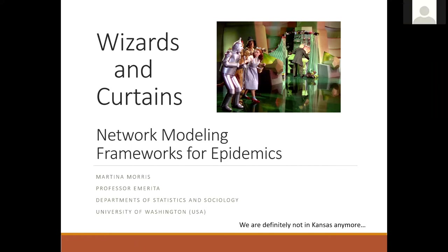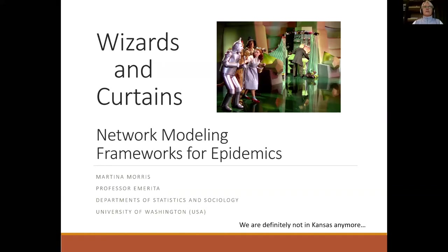This talk will be a very high-level overview of how network modeling, or the modeling of transmission networks, appears in the context of mathematical models for the spread of infectious disease. It's entitled 'Wizards and Curtains' because so much of this stuff tends to happen behind a curtain, and even if you are very well-versed in one particular form of mathematical modeling for epidemics, there are multiple forms, and the way modeling gets done can be opaque.